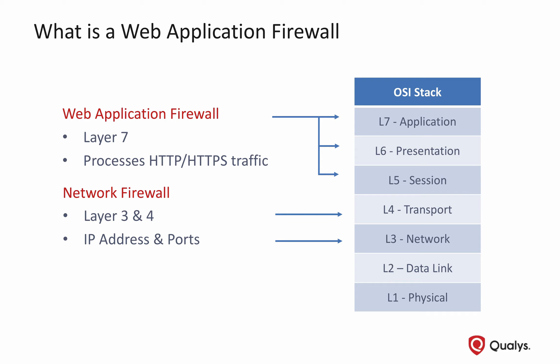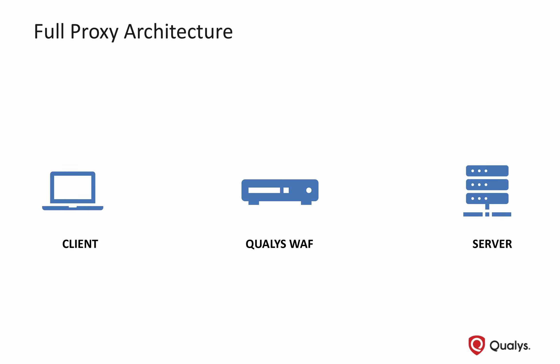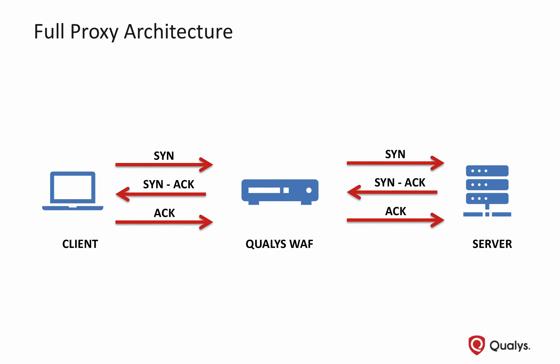Qualys Web Application Firewall provides far more specialized and in-depth security checks for web applications. It operates at layer 7 and prevents attacks targeted on web servers and application vulnerabilities. Qualys Web Application Firewall relies on a full proxy architecture which goes beyond understanding the traffic flow. This design makes the WAF appliance act as a receiver endpoint and originator of TCP connections, maintaining two separate connections.